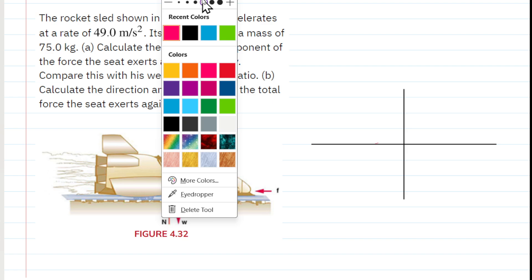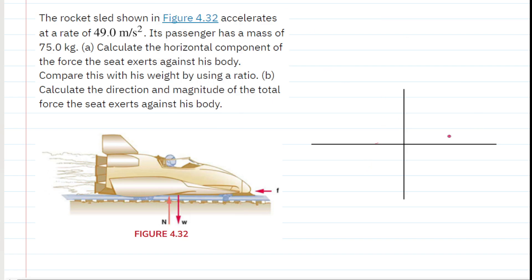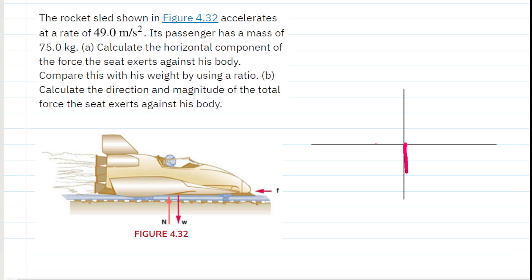Our first step is to draw the free body diagram, which shows forces acting on the rocket sled driver. The diagram shows a downward-acting weight — the gravitational force pulling downward on the driver. The normal force is exerted upward by the chair, and that upward force cancels the downward weight. We also have a horizontal force pointing along the horizontal axis, and that's the force we are looking for in this question.